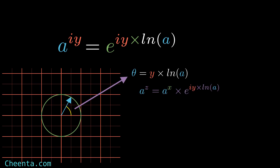So e to the power of some imaginary number actually means some rotation. We can write a to the power z as a scaling term times a pure rotation. The second term is a pure rotation as shown, and the first term represents some scaling. We first take a unit phasor, rotate it by an angle, then scale it according to the first term. If the first term is less than 1, we shrink it. Now we understand what complex exponents mean.